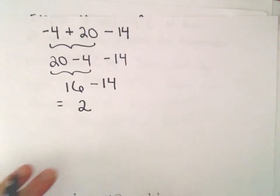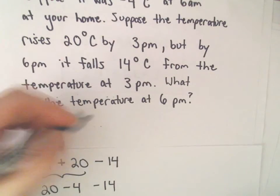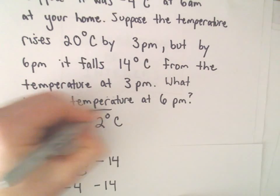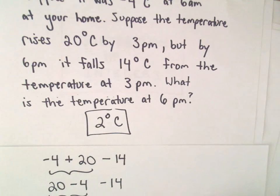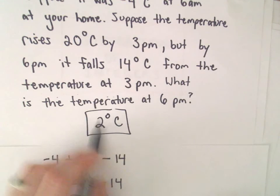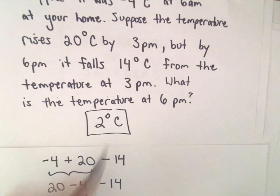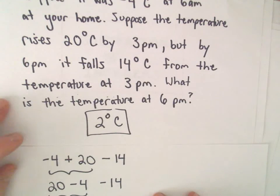So at 6 p.m. it looks like the temperature is going to be 2 degrees Celsius. So a little bit warmer than it was at 6 a.m., but still not weather you'd probably want to be at the beach if it was 2 degrees Celsius, right?